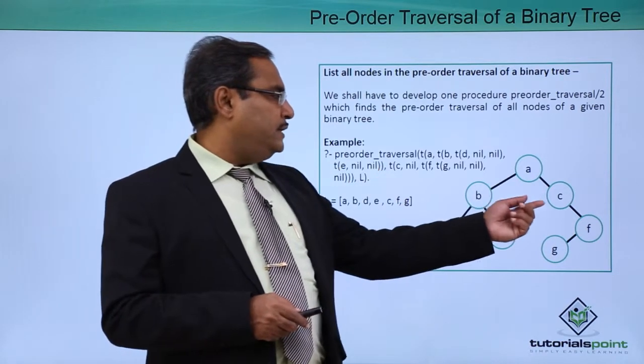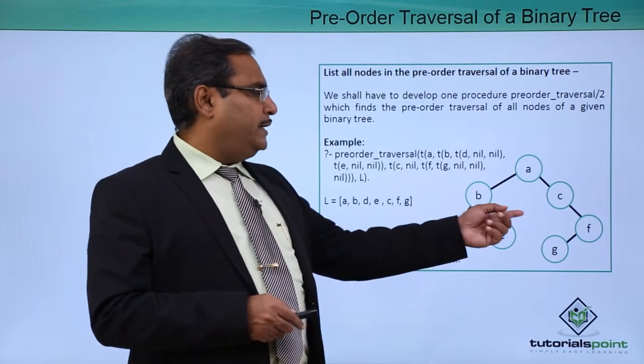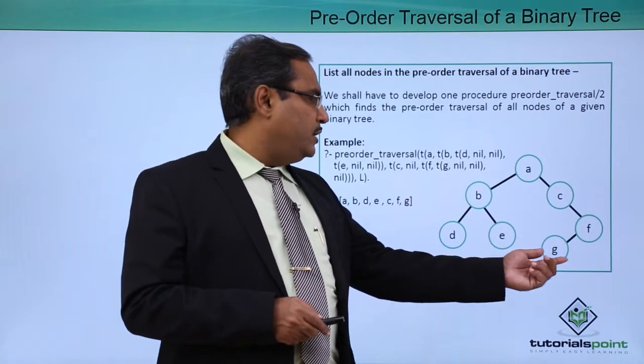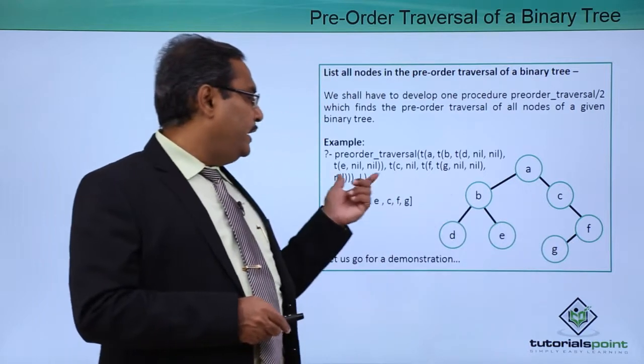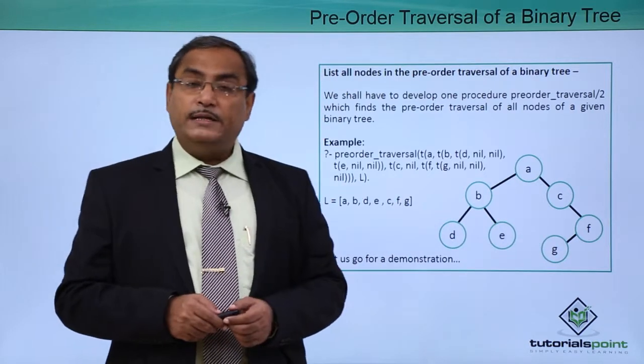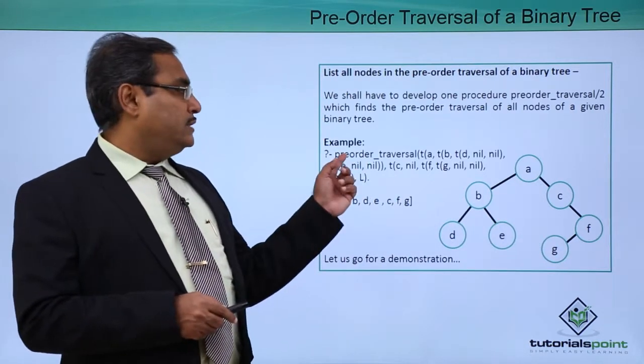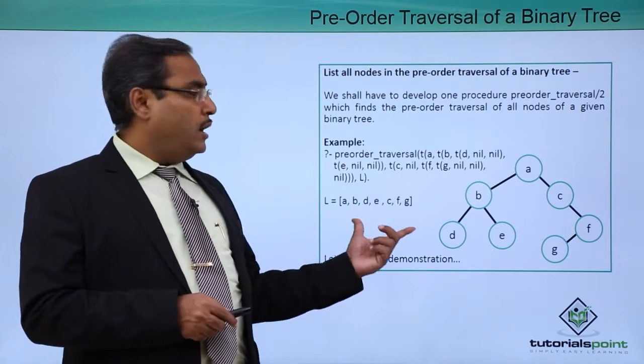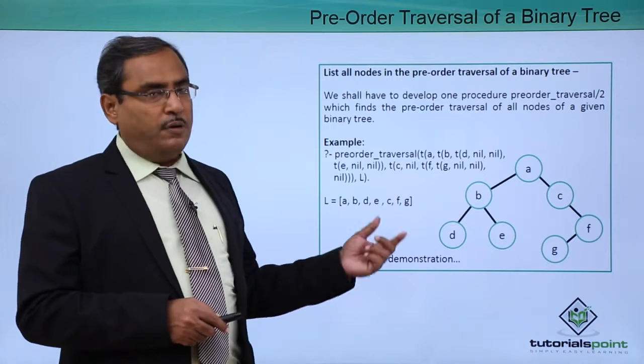Then I shall go for this C. So C is the root. Then it is having the left child nil and the right child is F. F is having this G and the right child nil. In this way it is working, there is a pre-order traversal. The pre-order traversal is being executed on this input and output will be shown in the form of a list.